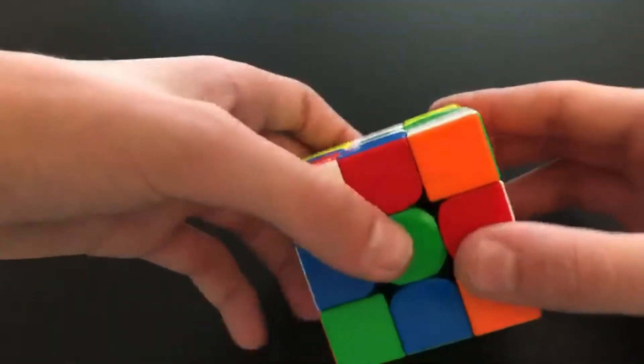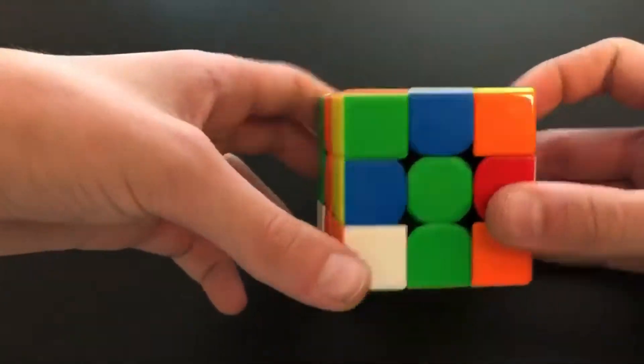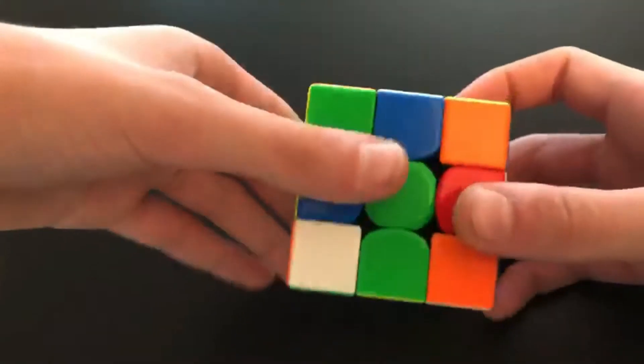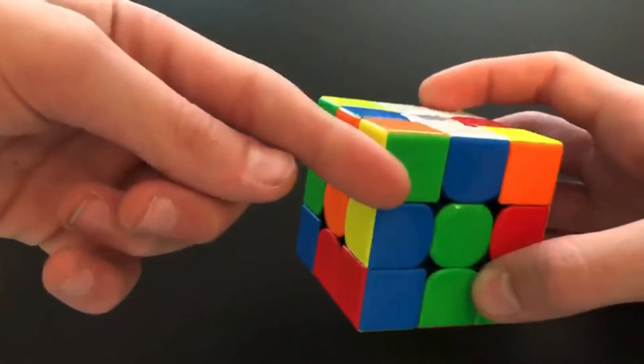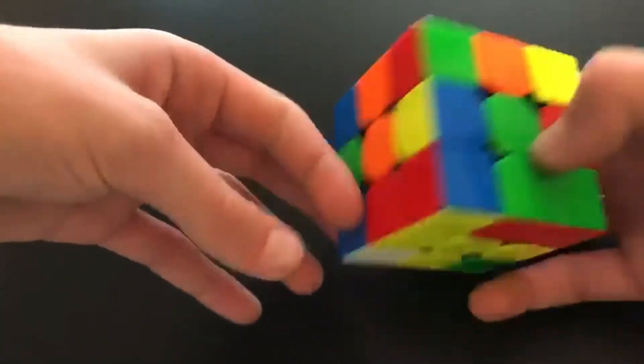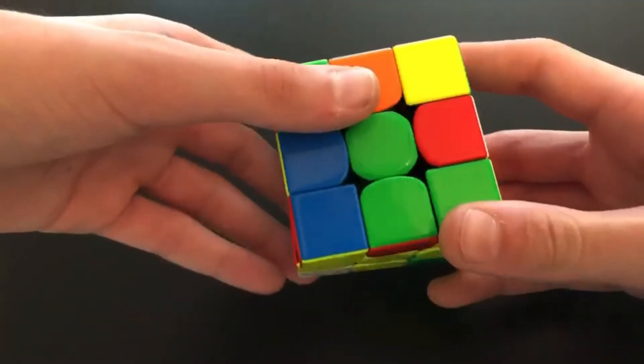And I do this one with R prime F R. And for this last one, I do D2, and then I actually do a U prime to preserve this corner, and then I insert blue like that.